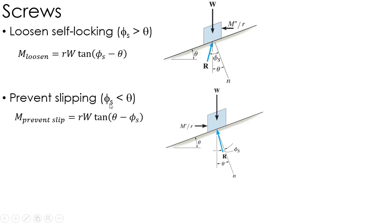In this case, my friction angle is actually less than my lead angle. So actually, R is still up and to the right, so I need to put my moment in the opposite direction simply just to hold it there. If I let go of R, this thing's going to slide right down the ramp.